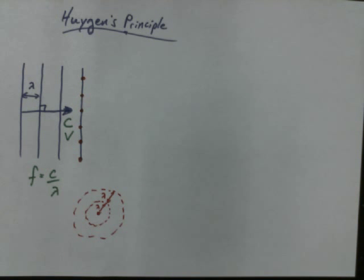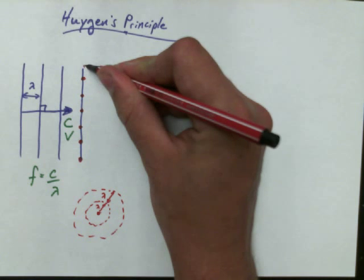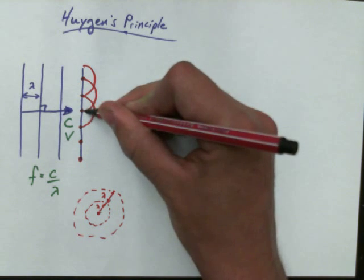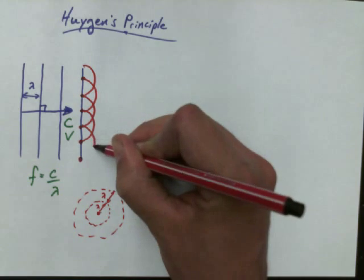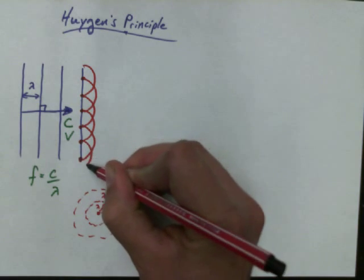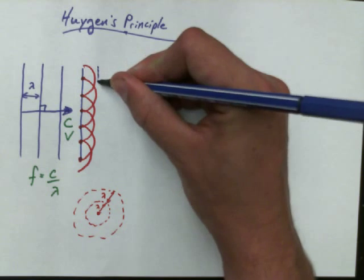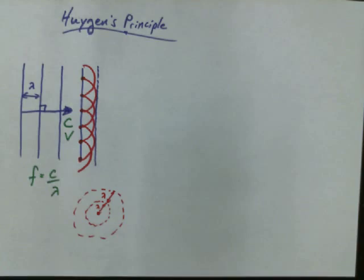In the case of water, you might think of each point source as being one water molecule bobbing up and down. If a water molecule bobs up and down, it would make a ripple — and that's what happens when water waves go forward. You notice that all these semicircles are centered on the point sources. Each individual point source makes a ripple.